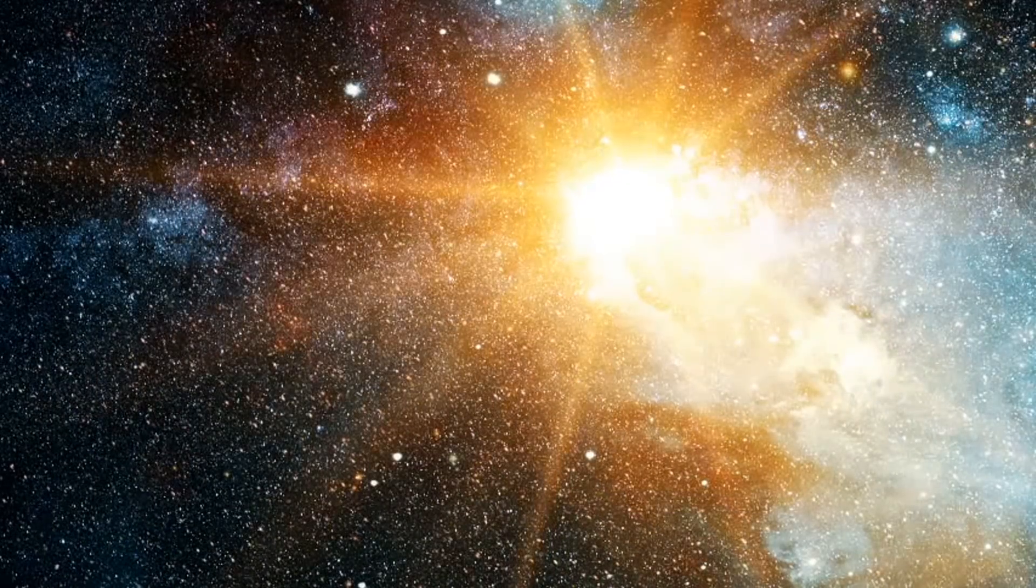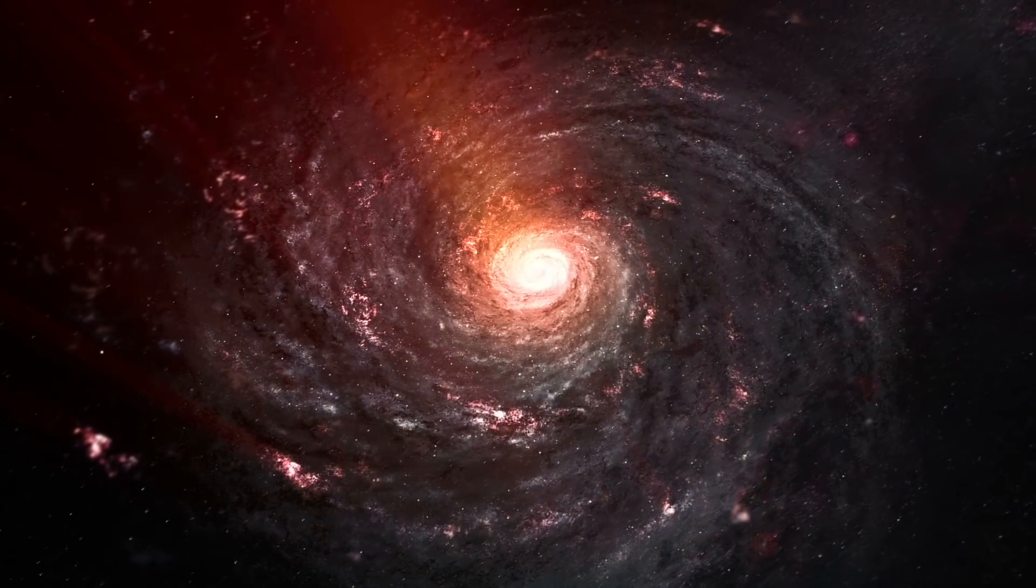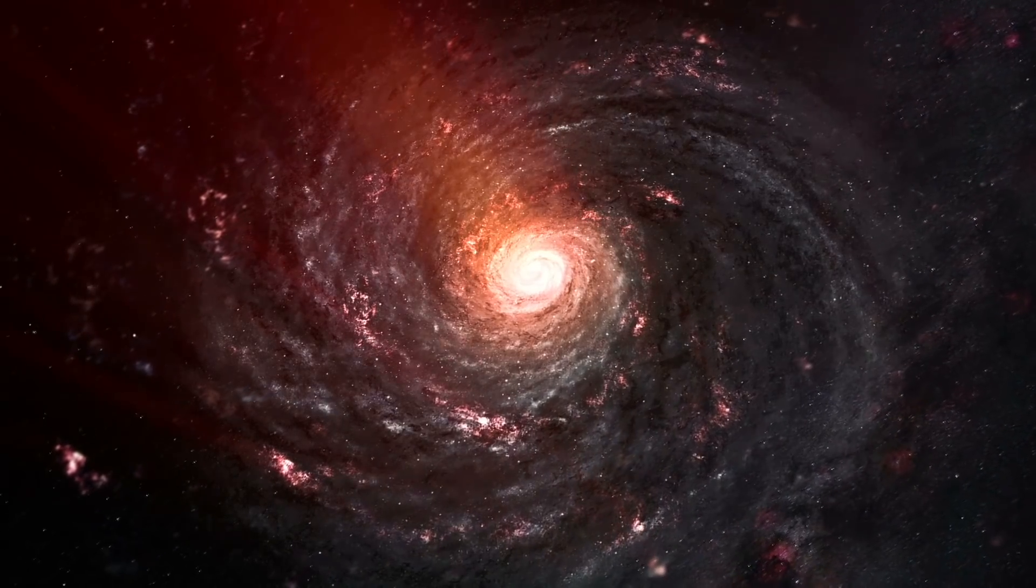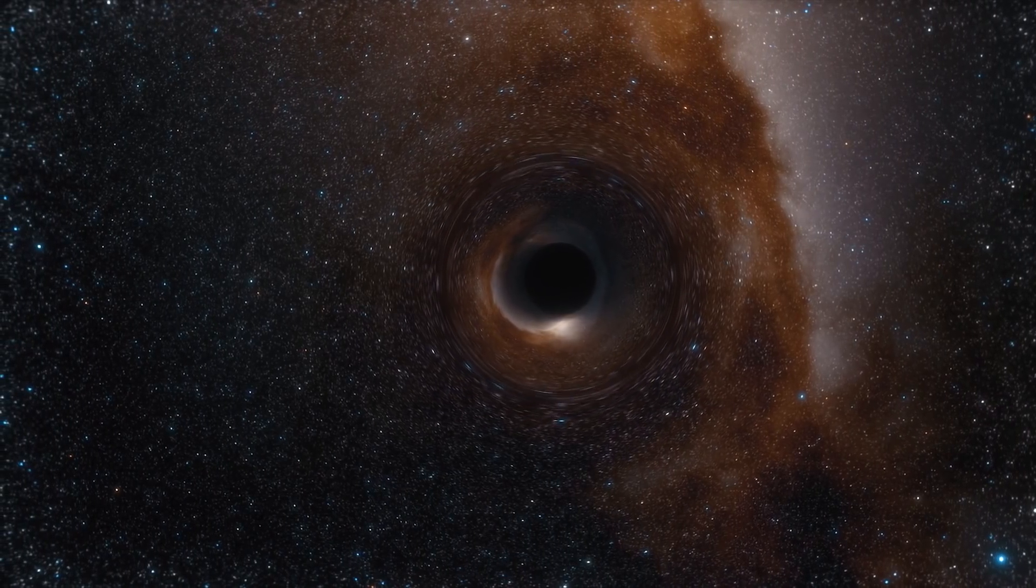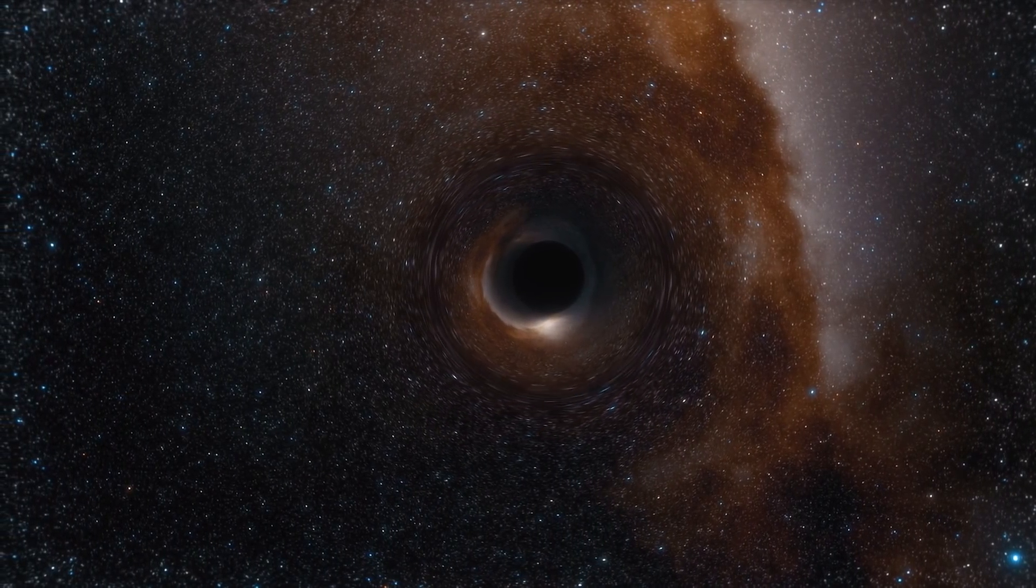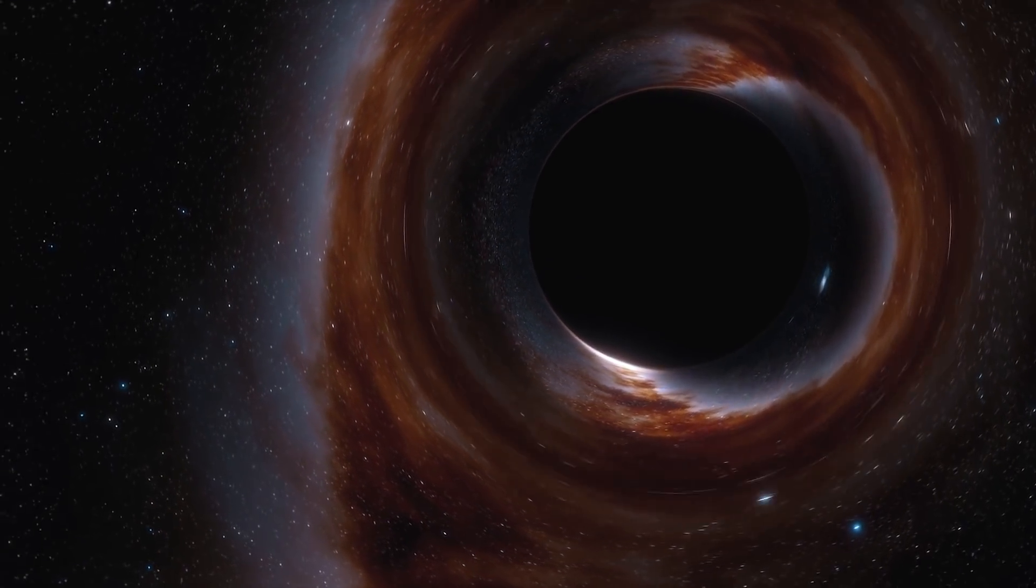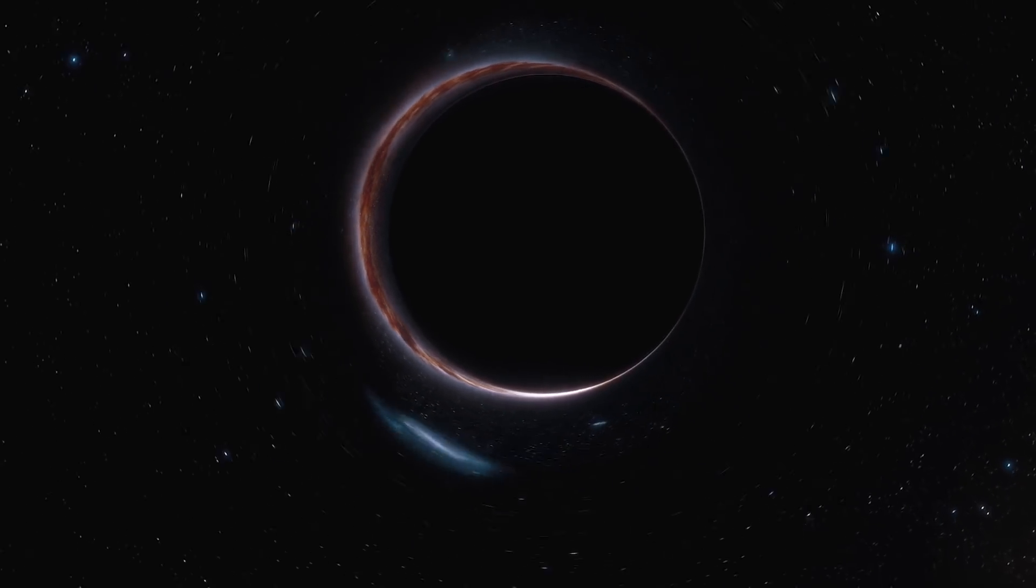NGC 6240 had previously been known to harbor two supermassive black holes on a slow collision course with one another. The galaxy we see today is the result of two separate galaxies merging. So, the black holes doing the same was inevitable. The third black hole, however, had been hiding from us until November last year, as it's the closest to one of its neighbors that scientists had ever discovered. Only 650 light years away.